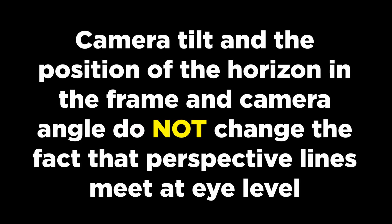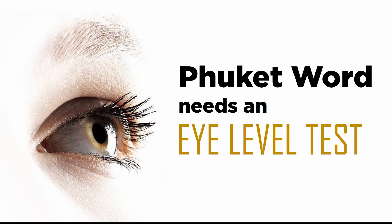So we now know that camera tilt and the position of the horizon in the frame and camera angle do not change the fact that perspective lines meet at eye level. So I think Phuket Word really does need an eye level test. He obviously doesn't understand what eye level means — he thinks he does, but he really doesn't. And this is one of the things that really winds me up about Phuket Word. He makes assertions, he describes them as if they're fact, but he has no evidence to back them up. He's done no tests, no empirical evidence to back what he says. All he has are words.